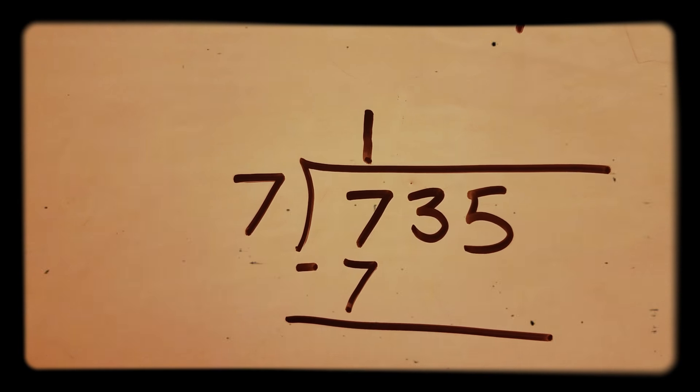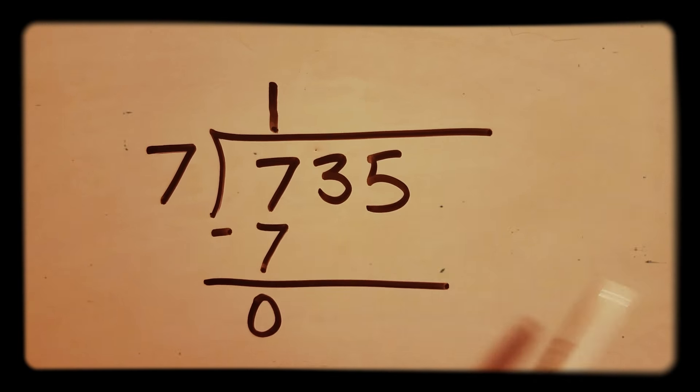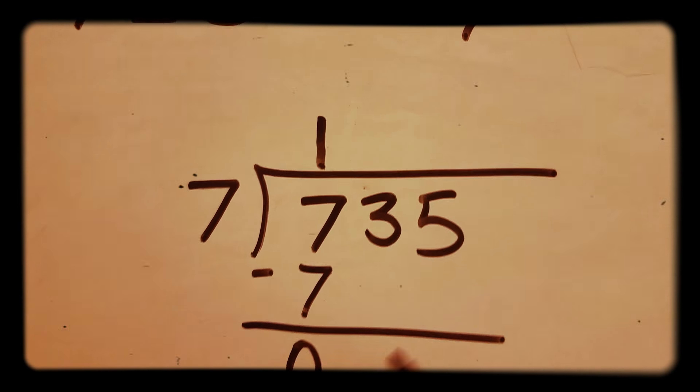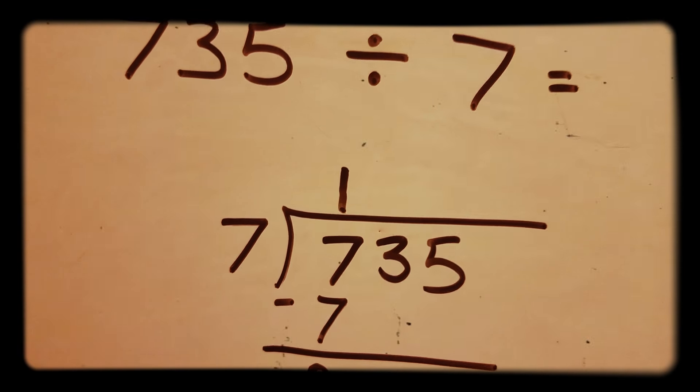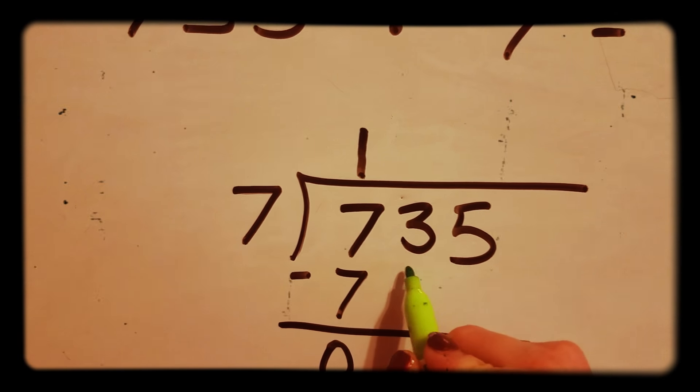And now we subtract. 7 minus 7 is 0. But we still have these numbers over here, so we can't stop. How many times can 7 go into 0? It doesn't. So you have to bring down the 3.